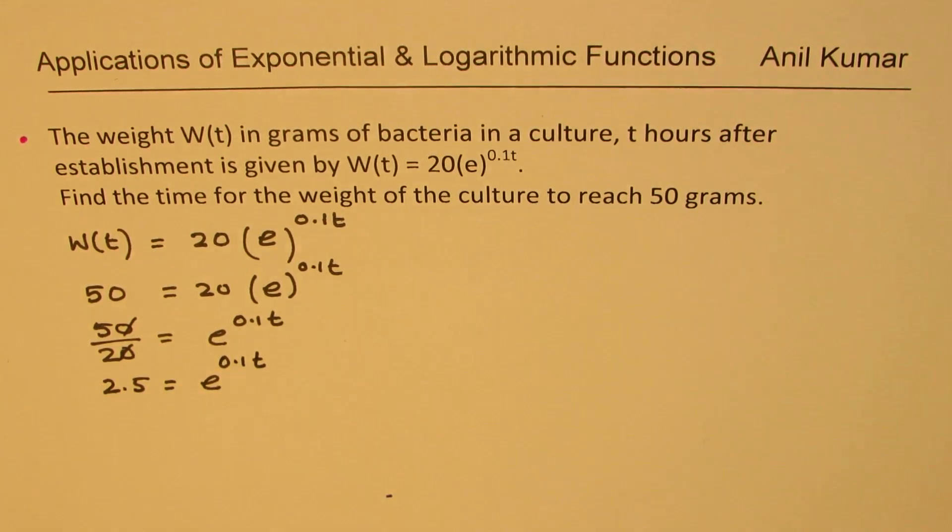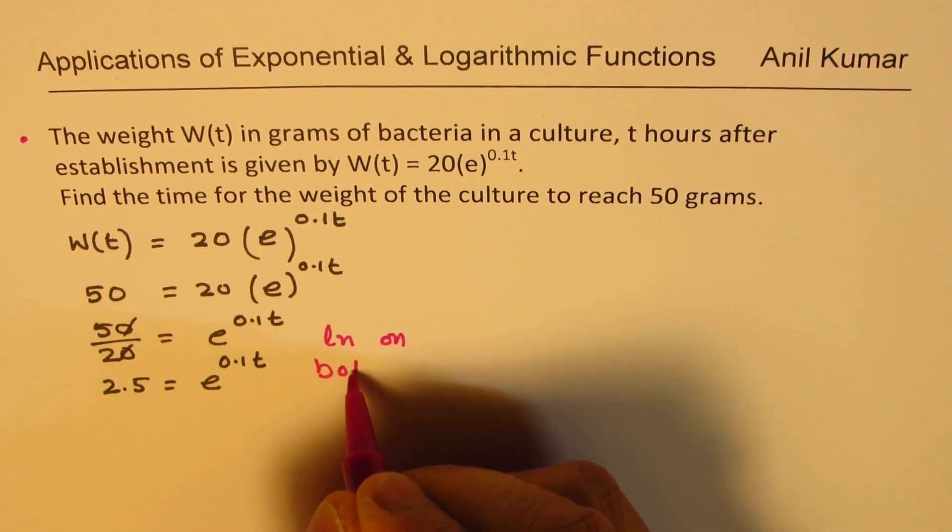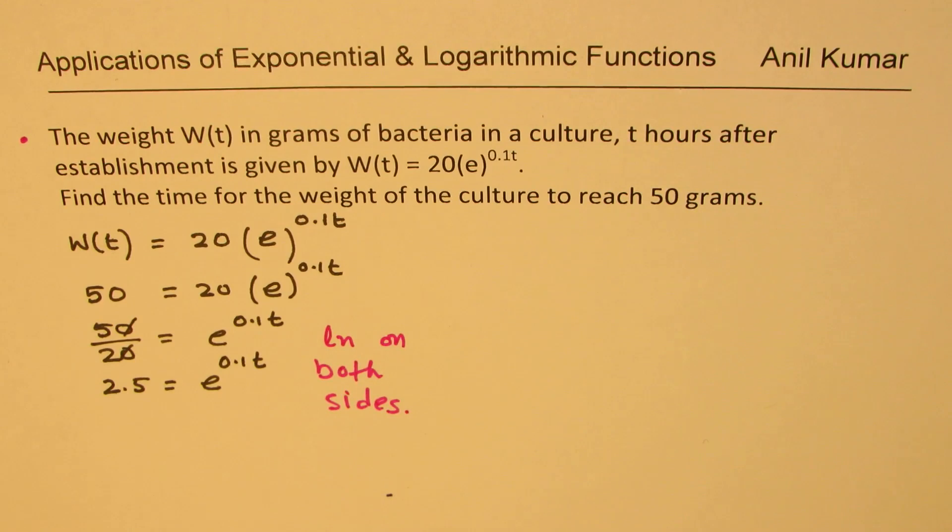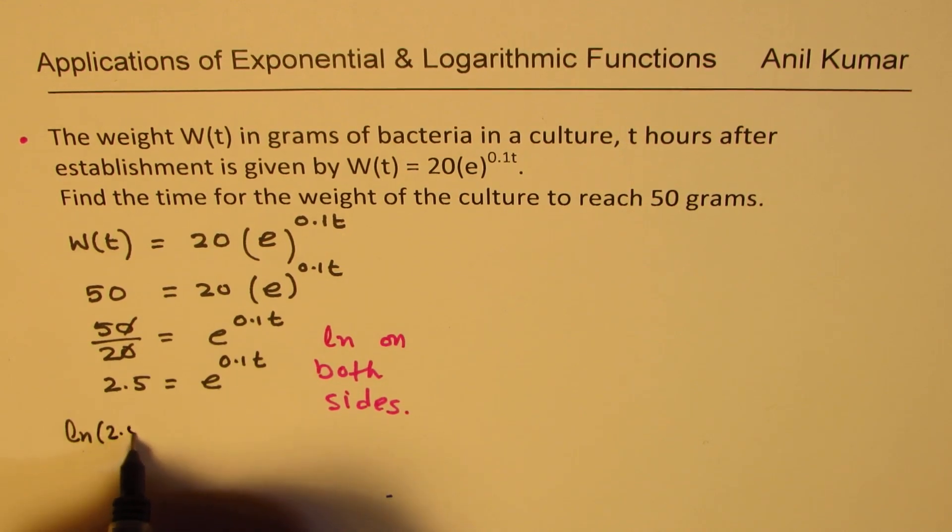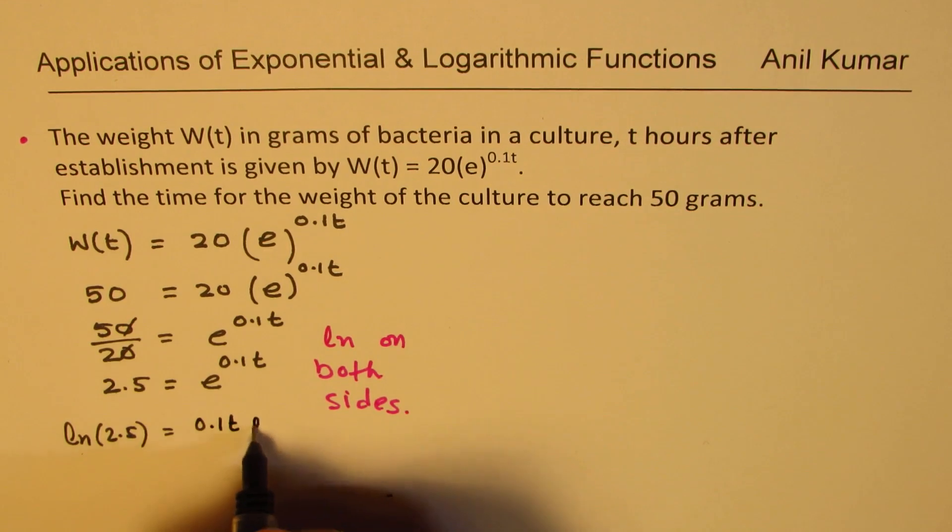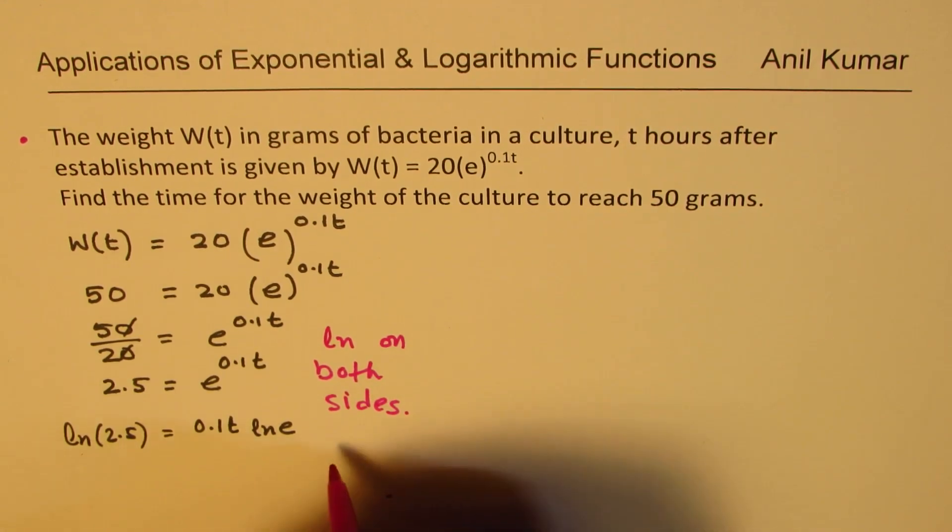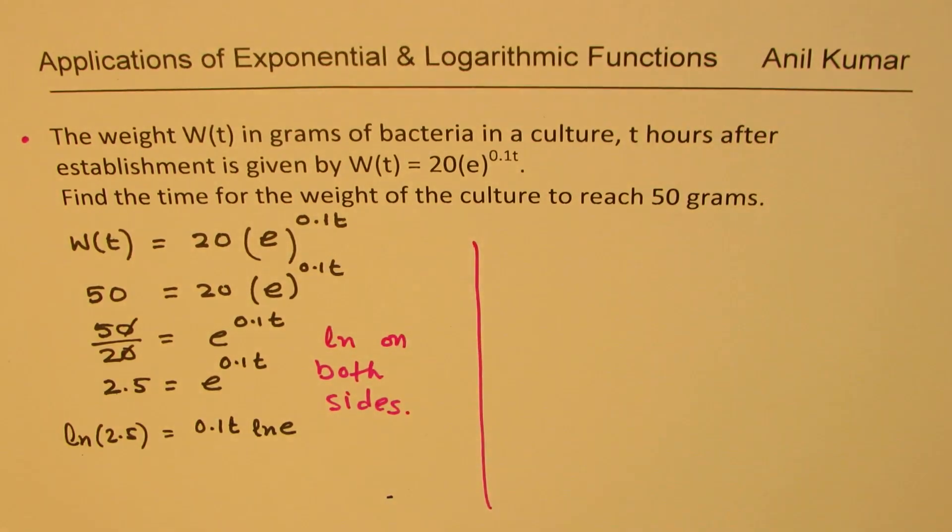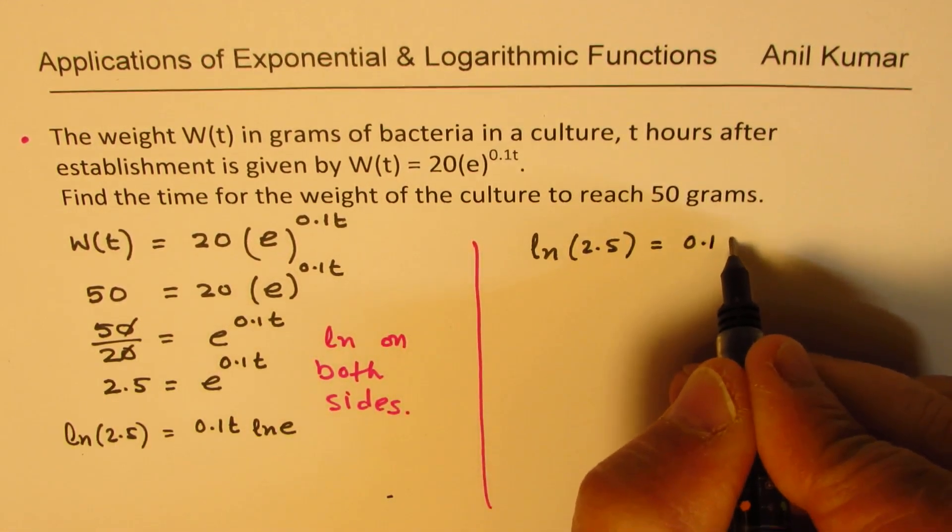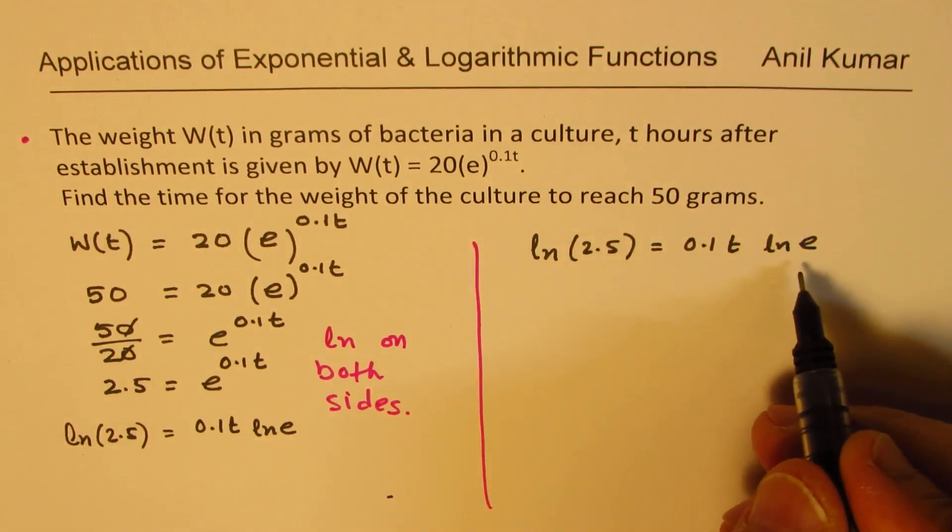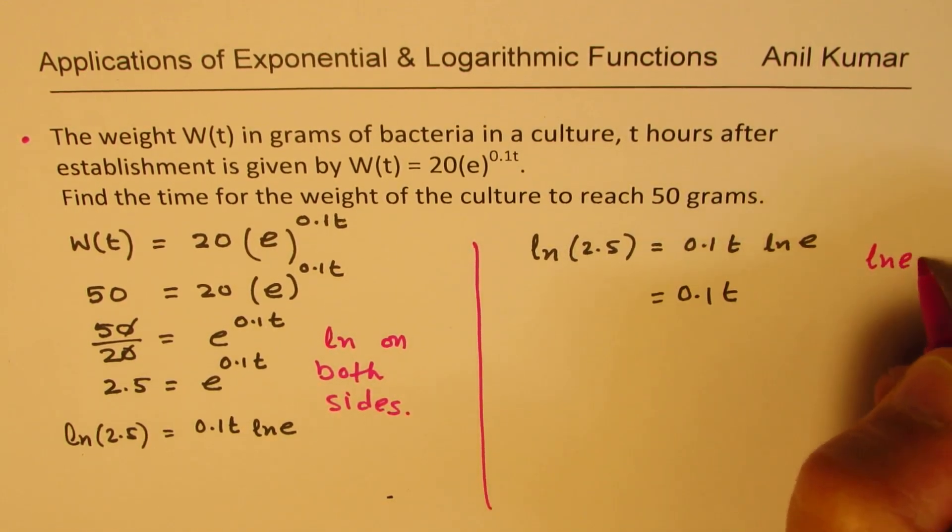Now to solve, what should we do? Whenever you're working with e, take natural log on both sides. So we get ln of 2.5 equals ln of e to the power of 0.1t, which gives us ln 2.5 equals 0.1t times ln e. Now ln and e are inverse of one another. We know that ln e equals 1. Therefore, we get ln 2.5 equals 0.1t times 1.